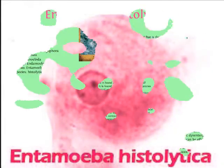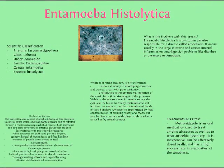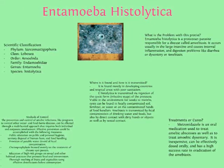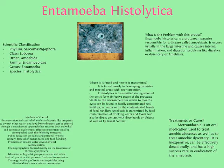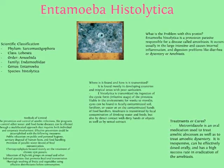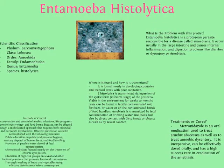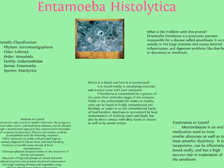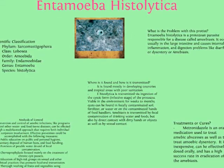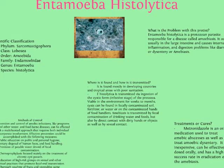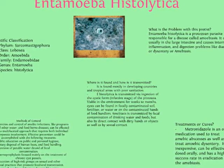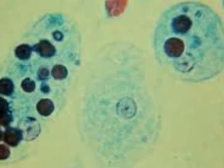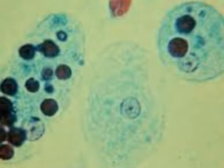If the disease spreads into the bloodstream, it may cause abscesses in the liver, the brain, and the spleen. It usually takes 1 to 4 weeks to show up after ingestion of the parasite. On average, about 1 in 10 people who are infected with it become sick from the infection.